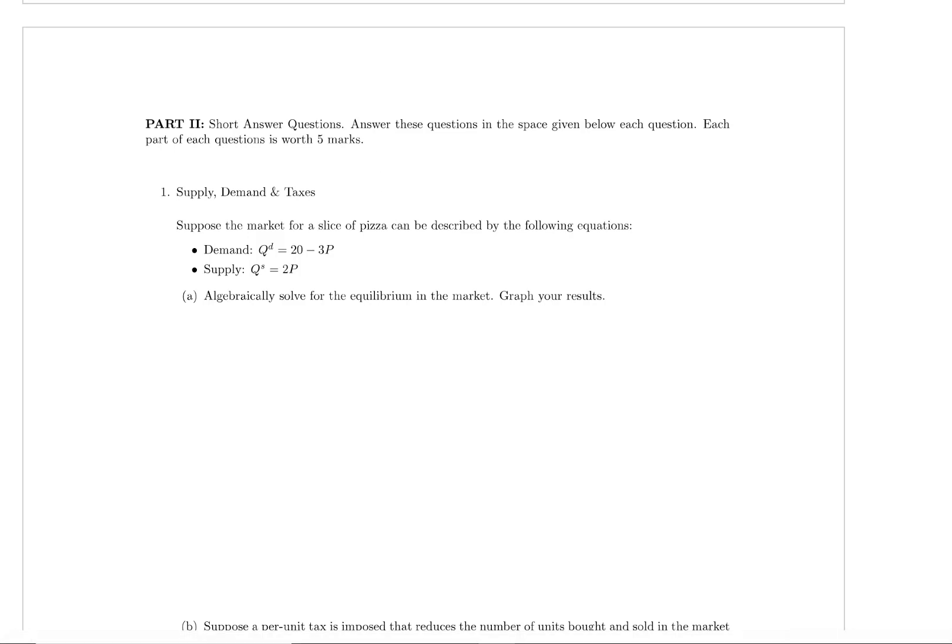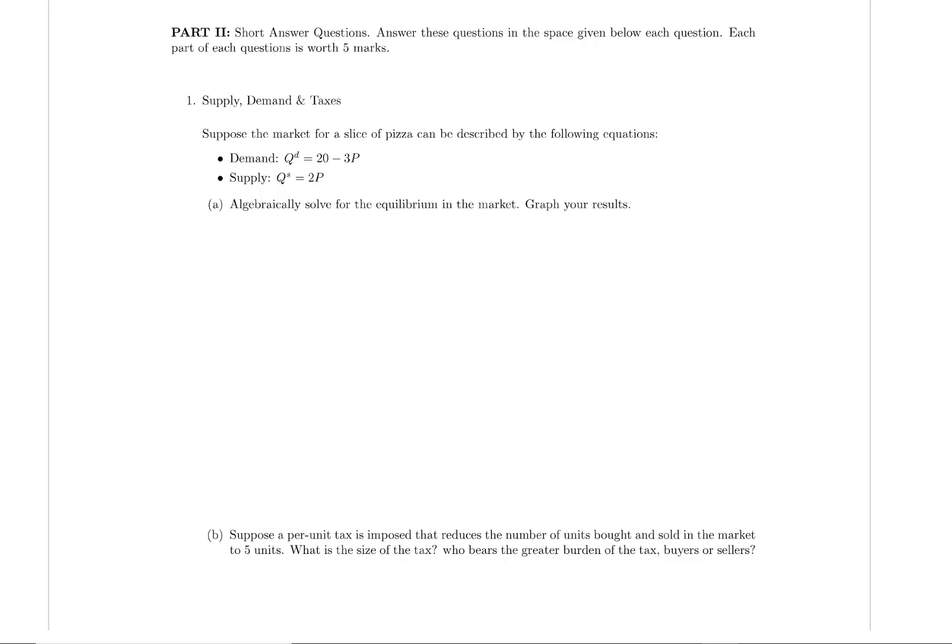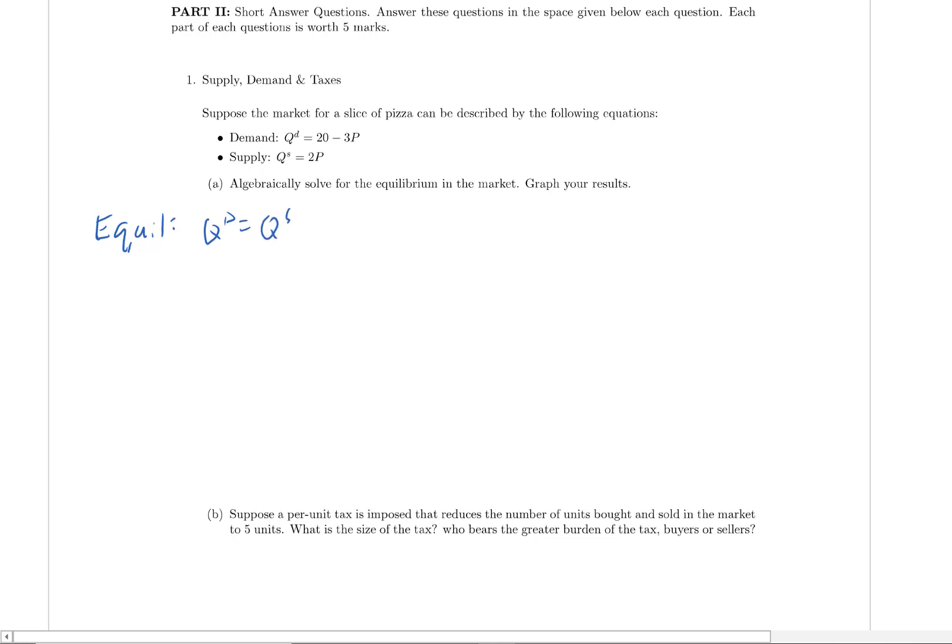Alright, so let's start working on this. So we know at equilibrium the quantity demanded equals the quantity supplied. So we can just set these two equations equal to each other. So 2p equals 20 minus 3p. So the left hand side is the quantity supplied. This is quantity supplied. Let's make that a little bit more clear. This is quantity demanded.